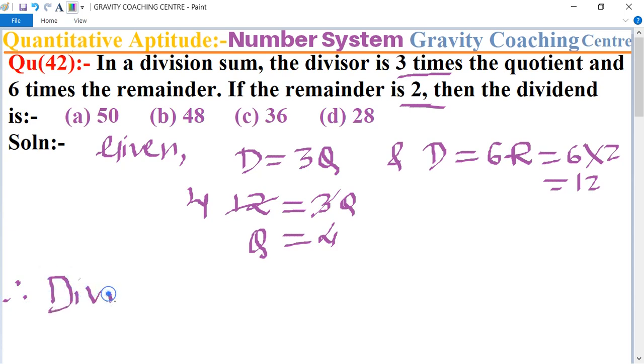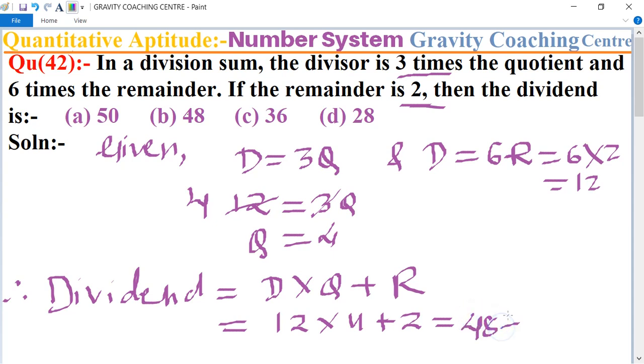divisor into quotient plus remainder. So here divisor is 12 and quotient is 4, plus remainder is 2. So 12 times 4 is 48 plus 2 equals 50, which is the required answer. So option (a) is the right one.